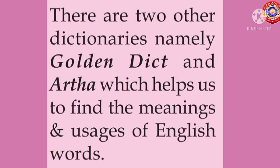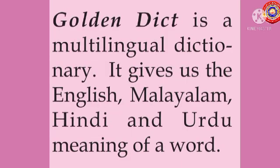There are two other dictionaries — GoldenDict and Artha — which help us find the meanings and usages of English words. GoldenDict is a multilingual dictionary, meaning a dictionary consisting of various languages. 'Multi' means many, 'lingual' means language, so multilingual means many languages. It gives us the English, Malayalam, Hindi, and Urdu meaning of a single word.